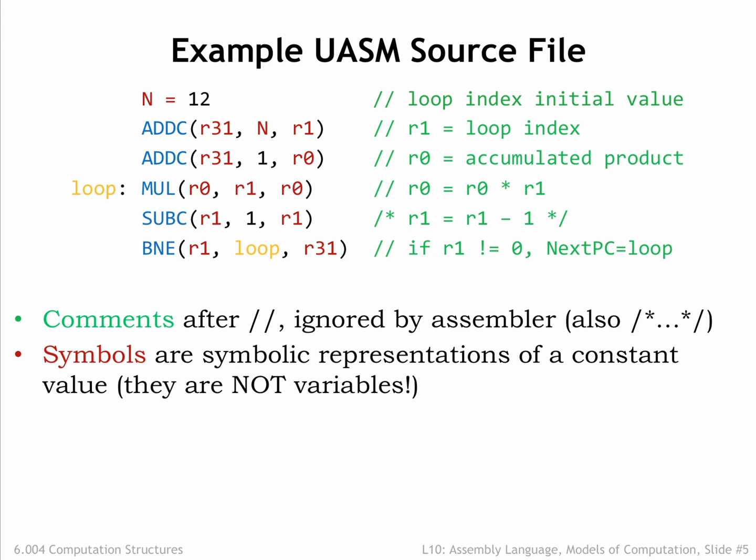Note that all the register names are shown in red. We'll define the symbols R0 through R31 to have the values 0 through 31, then we'll use those symbols to help us understand which instruction operands are intended to be registers, e.g. by writing R1, and which operands are numeric values, e.g. by writing the number 1. We could just use numbers everywhere, but the code would be much harder to read and understand.